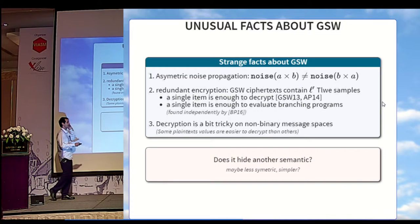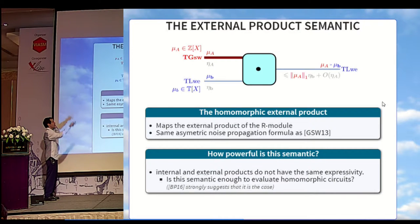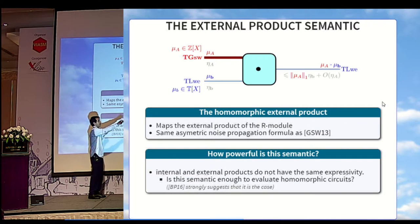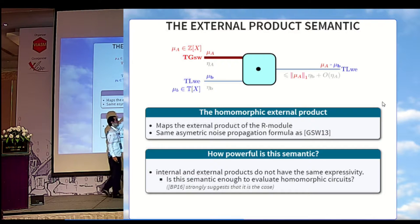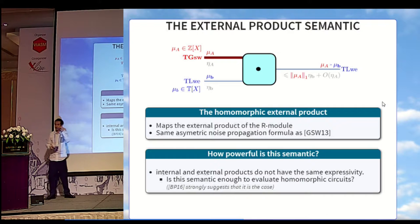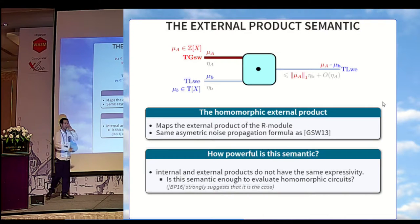Does all of that hide another semantic that would be less symmetric or simpler? The answer is yes. We can write an external product between a GSW ciphertext on the integer message base and an LWE ciphertext on the continuous torus, which maps the external product of the module. For the noise formula, we have exactly the same as the original GSW. We know that internal and external products don't have the same expressivity, especially concerning composition. The results in Brackersky and Perlman strongly suggest that it is enough to evaluate most homomorphic circuits.